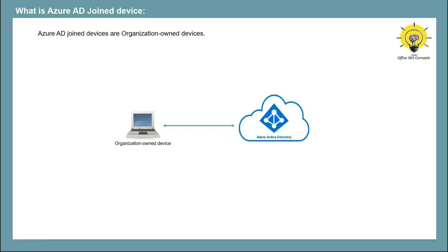Azure AD Joined Devices are devices that are owned by an organization. We can join these devices to Azure Active Directory so that an administrator can apply Intune policies to control the configuration on these devices, or we can apply conditional access policies on these particular devices. In case of Azure AD Registered Devices, users log into the machines with their personal accounts. But in case of Azure Active Directory Joined Devices, users log into these machines with their Azure AD credentials.